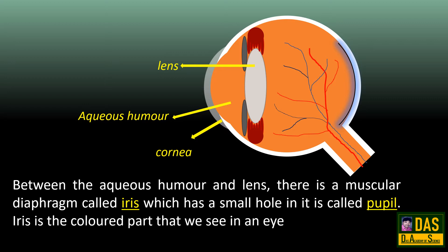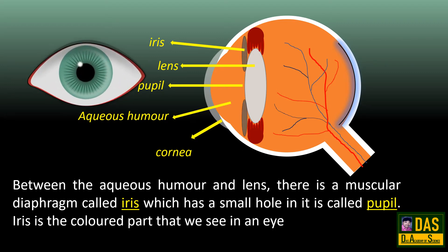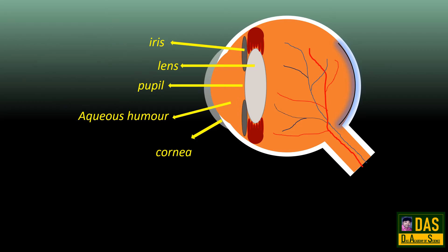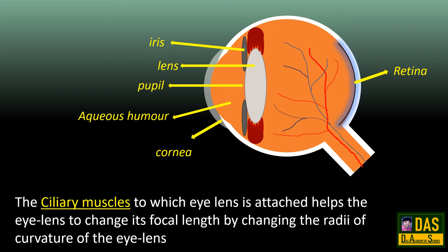Between the aqueous humor and the lens, there is a muscular diaphragm called the iris, which has a small hole in it called the pupil. The iris is the colored part that we see in an eye. The ciliary muscles, to which the eye lens is attached, help the eye lens change its focal length by changing the radius of curvature of the eye lens.